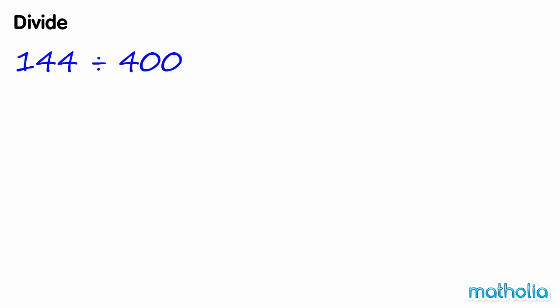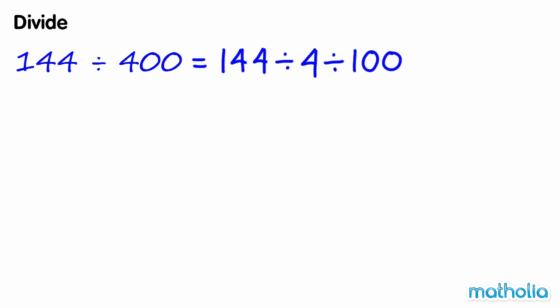Divide. Find 144 divide 400. 400 is a multiple of 100, so we can write 144 divide 400 equals 144 divide 4 divide 100.